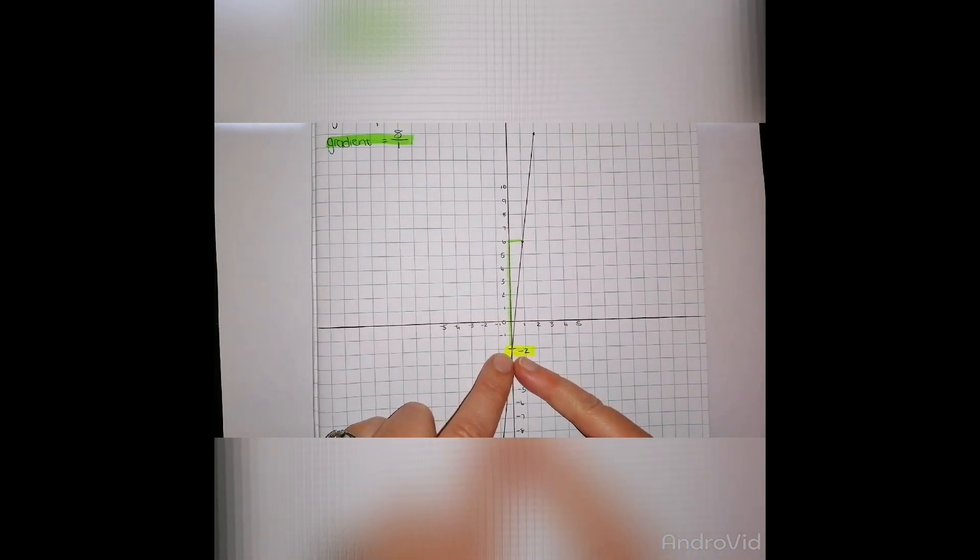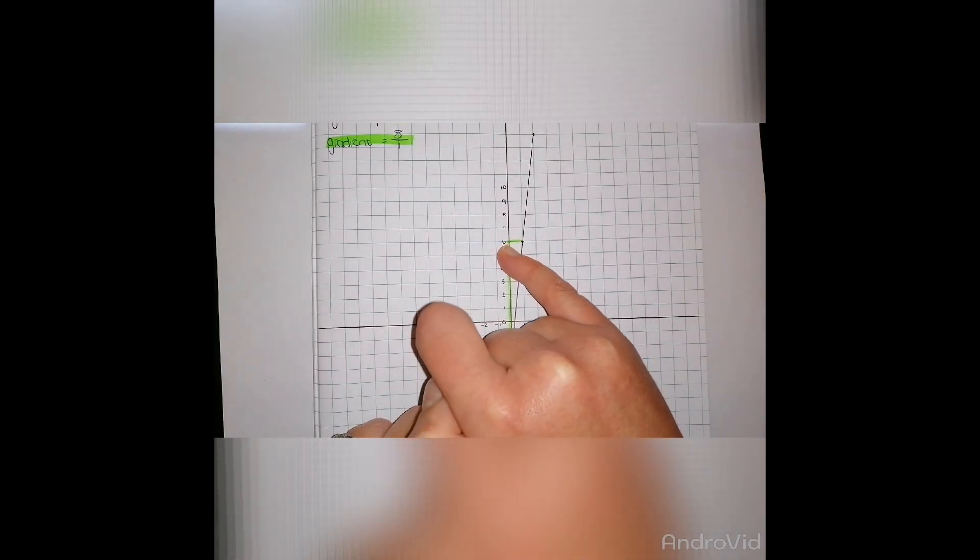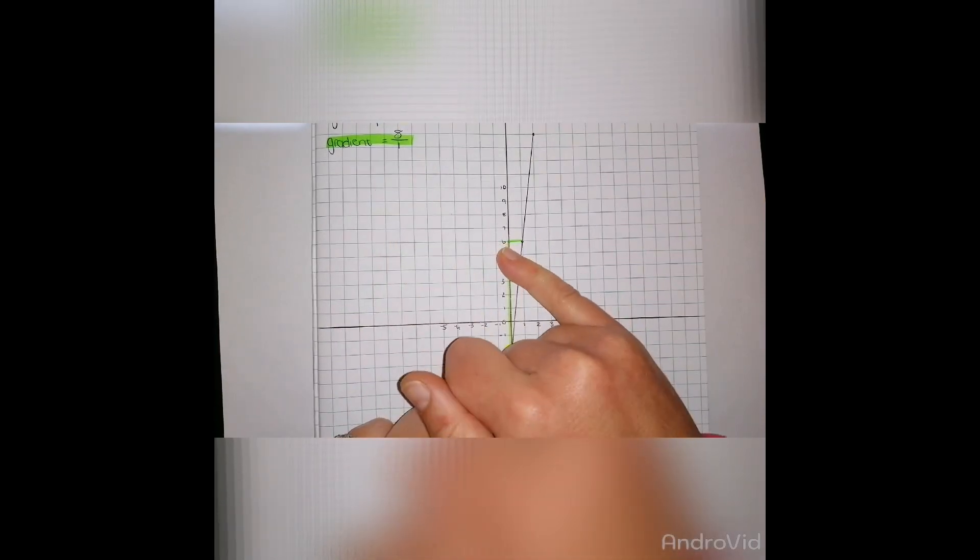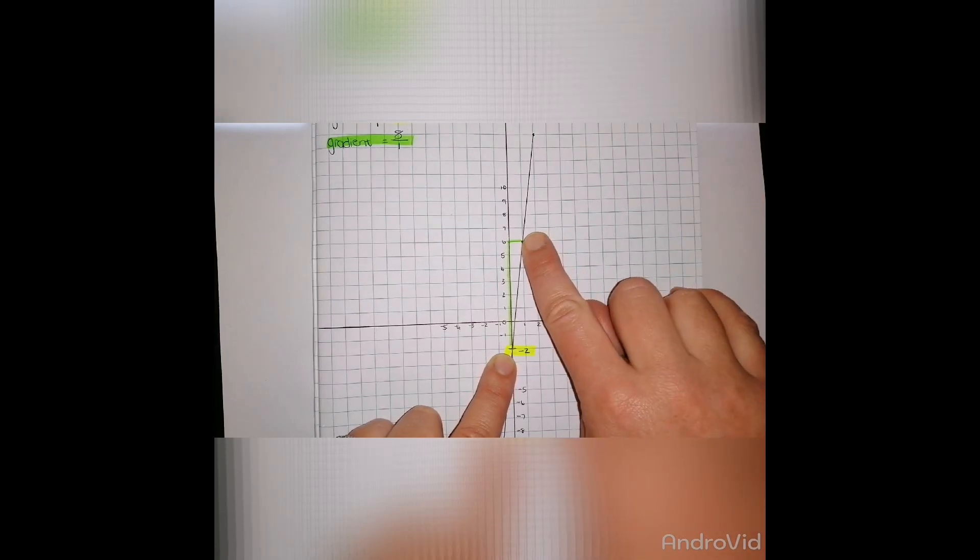Going from negative 2, adding 8 will give me 6 up there, and then I need to go out by 1 because it's rise over run. Run means horizontal, out by 1, and there I plot my second coordinate.